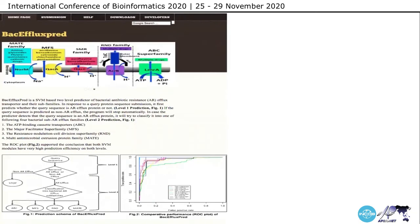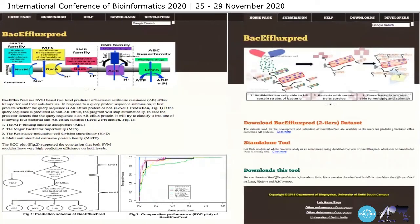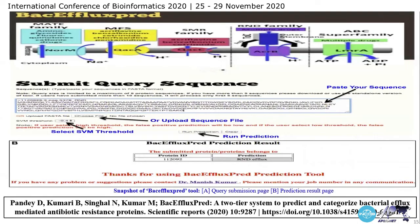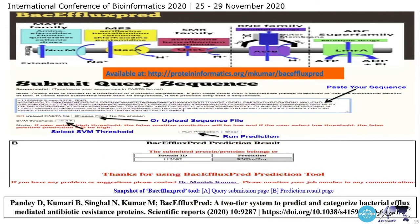This shows the web resources of the designed tool. This is the home page. This is the download page where users can download the dataset or the standalone tool. The standalone tool is built for bulk analysis. This is the submission page where users can submit or browse their sequence file and adjust the SVM threshold — we have fixed the default threshold at minus 0.4 — and it will give prediction results showing the protein ID and the prediction result in the first column. It is freely accessible using the link provided.